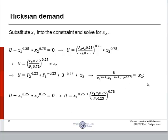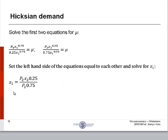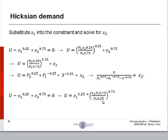And then we have x2 equals utility over p2 to the power of 0.25 times p1 to the power of negative 0.25 times 3 to the power of negative 0.25. So now that we've solved for x2, we want to solve for x1. So basically, we rearrange this term, and we express it in terms of x2, and then we substitute it back into our utility constraint, and we solve.